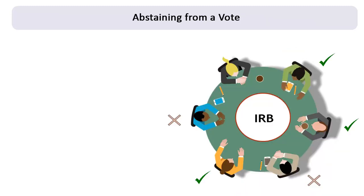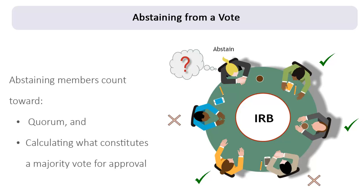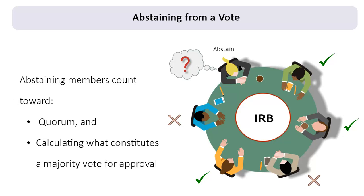There may be circumstances when some members choose to abstain when voting on a protocol—for example, they may not feel adequately informed to make a decision, or are genuinely undecided. Members who participated in a protocol's review but abstained from voting are still considered to be members present at the meeting. Therefore, they count toward quorum and for calculating what constitutes a majority vote for approving a research study.